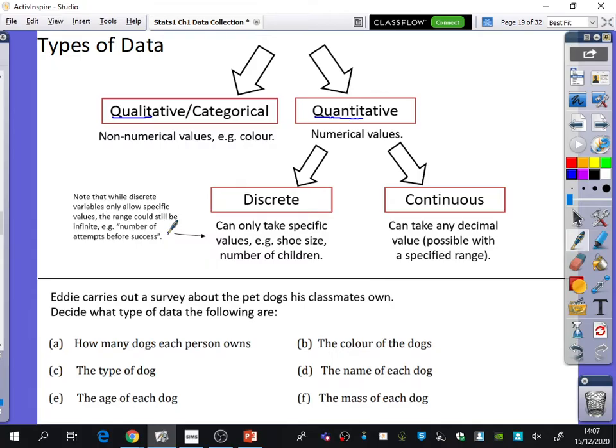I've got a few things down here that we're going to briefly think about what type of data they are, because these are little one markers that will come up in your stats exam. It says Eddie carries out a survey about the pet dogs his classmates own. Decide what type of data the following are. Make sure first of all we decide whether it's one of these two, and if it's quantitative, you then have to decide if it's discrete or continuous. How many dogs each person owns is what? Discrete. So it's quantitative and discrete.